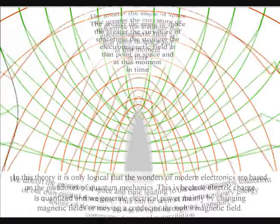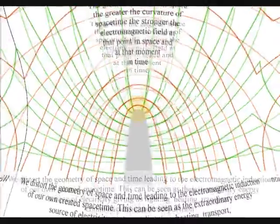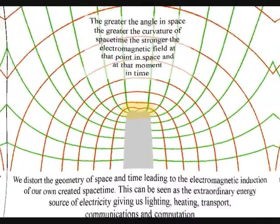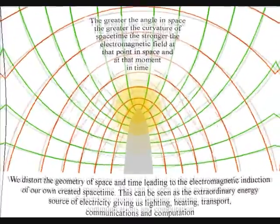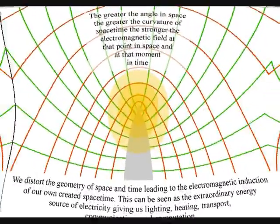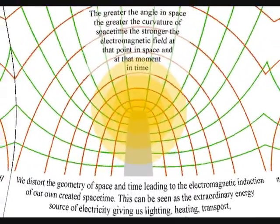This is because electric charge is quantized, and we generate electric power mainly by changing magnetic fields, or moving a conductor through a magnetic field. This will distort the geometry of space and time, leading to the electromagnetic induction of our own created spacetime, in other words, electricity.